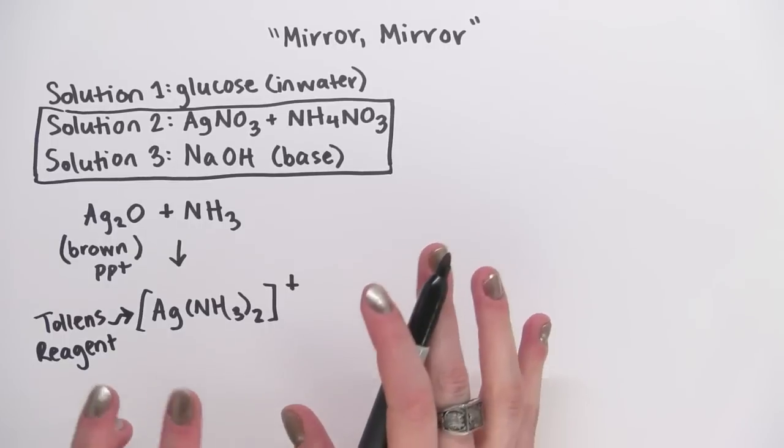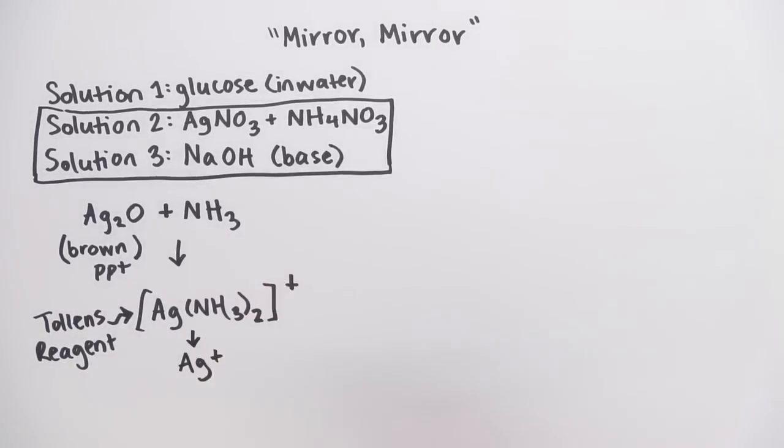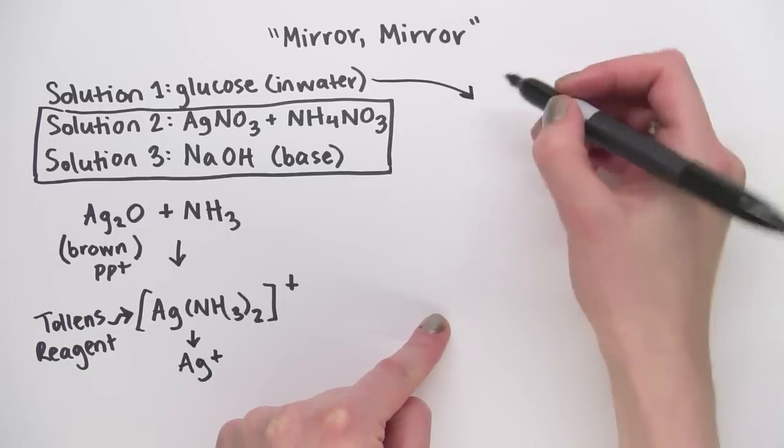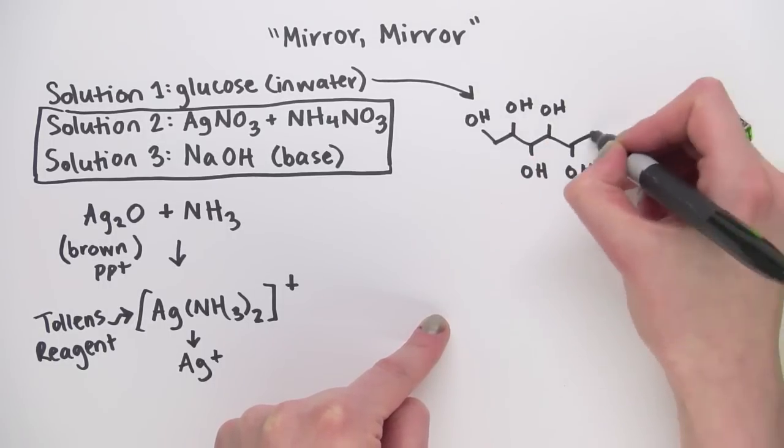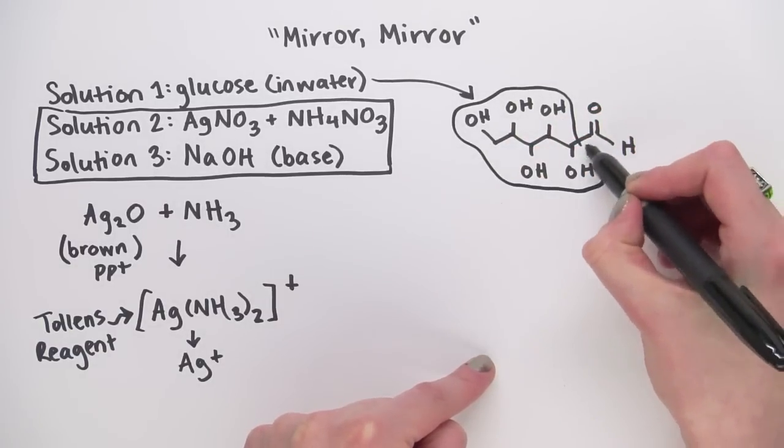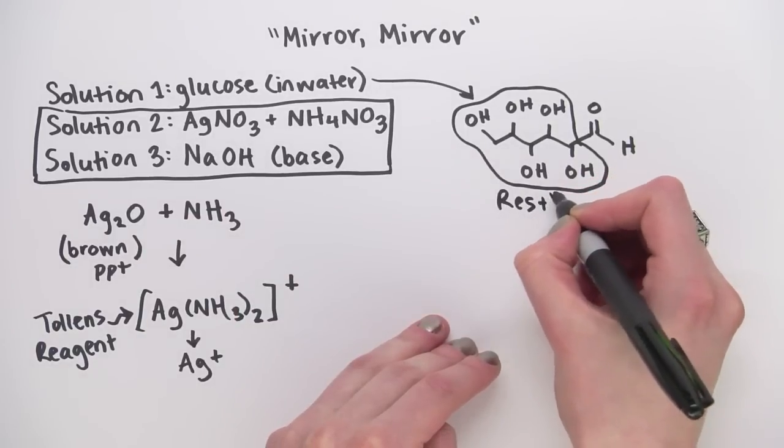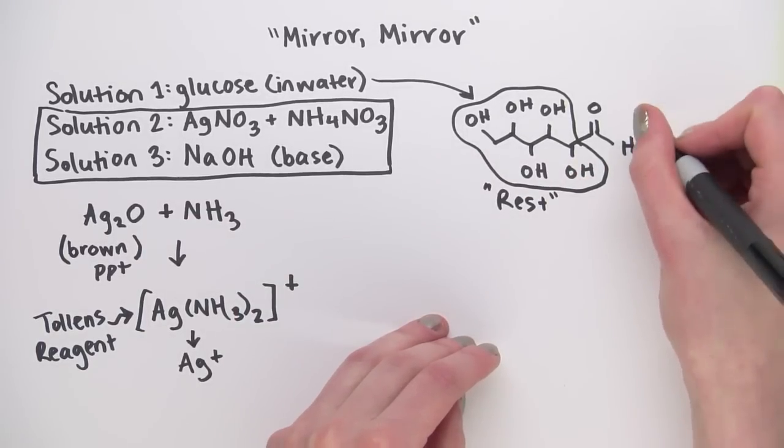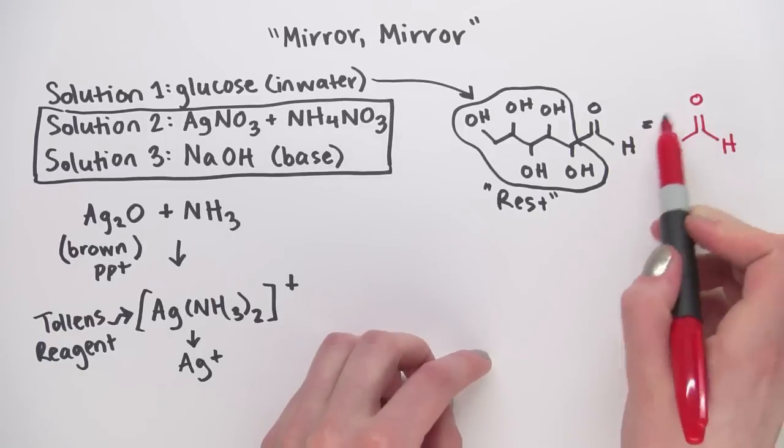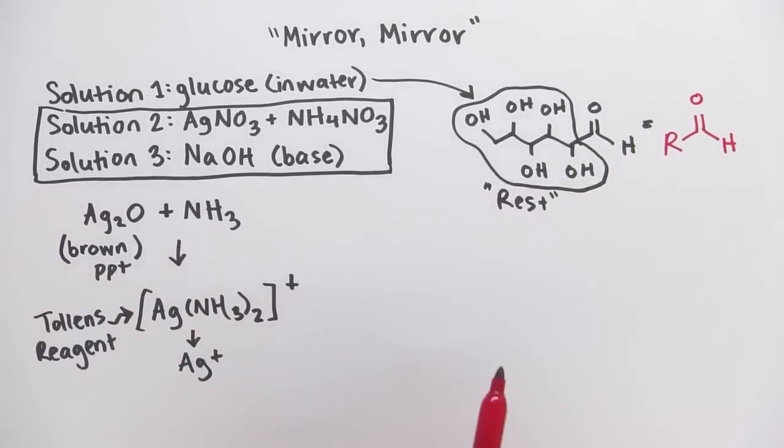Now, the positive charge is borne by the silver. So what we have in solution is essentially silver ions. Now, looking at solution one, glucose looks like this. We don't really care about this whole part of the molecule. So we're going to call it R for the rest. So glucose is basically this. And this part of the glucose is going to start reacting with the silver ions. Let's watch what happens.